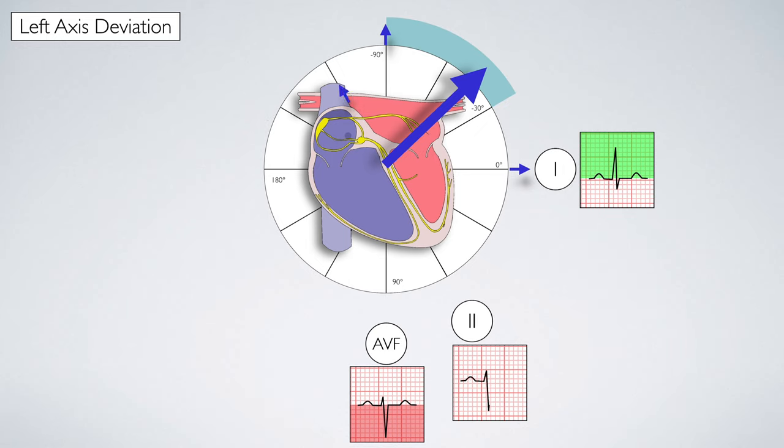And so long as the electrical vector is moving away from lead two, producing a negative QRS complex in this lead, we can be certain that the axis falls between minus 30 and minus 90.